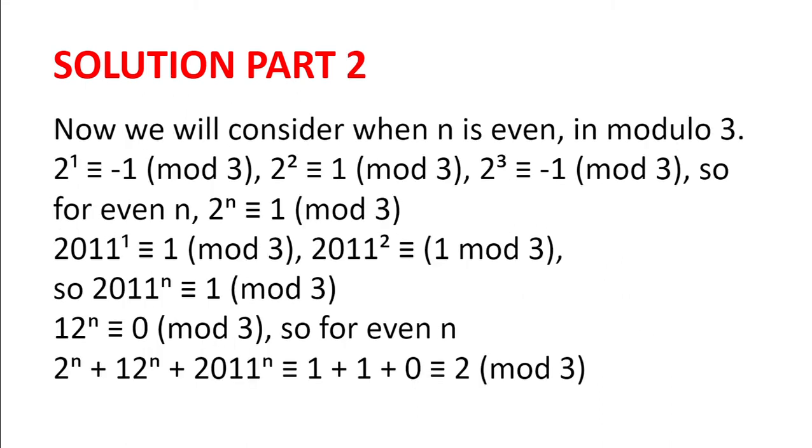So now we will consider when n is even, and this time in modulo 3. So 2 is minus 1 modulo 3, 2 squared is 1 modulo 3, 2 cubed is minus 1 modulo 3, and so for even n, 2 to the power of n is 1 modulo 3. Now 2011 is 1 modulo 3, and 2011 squared is also 1 modulo 3. Since 12 to the power of n is 0 modulo 3,